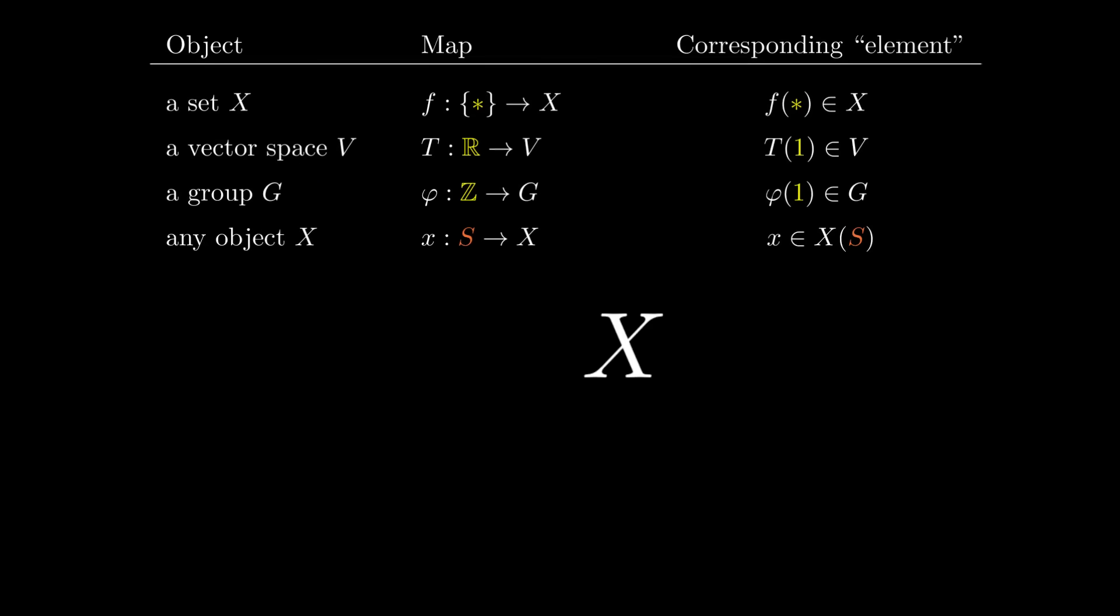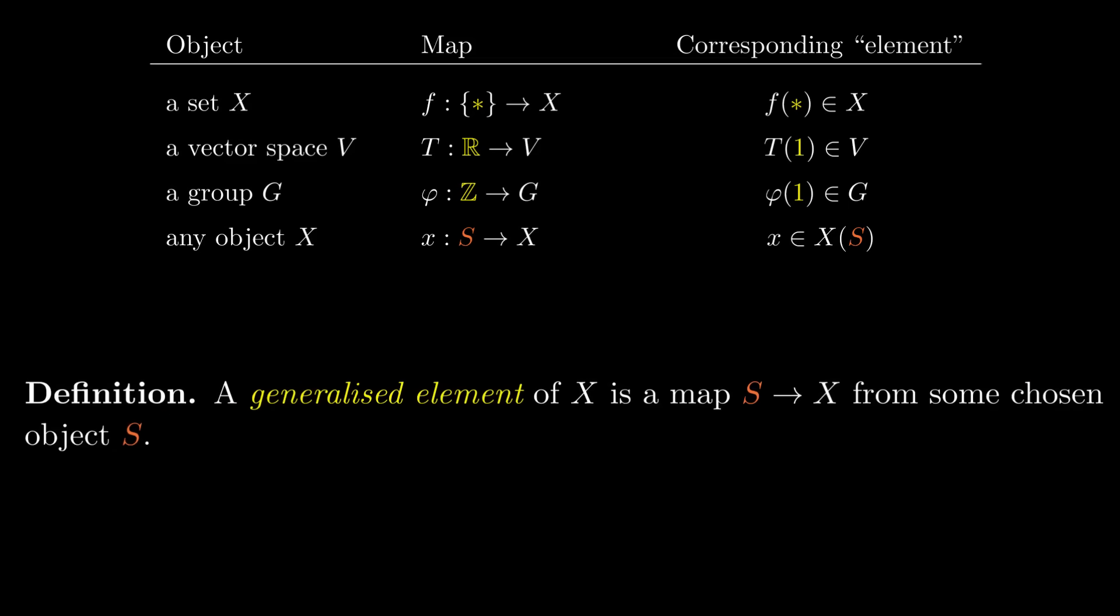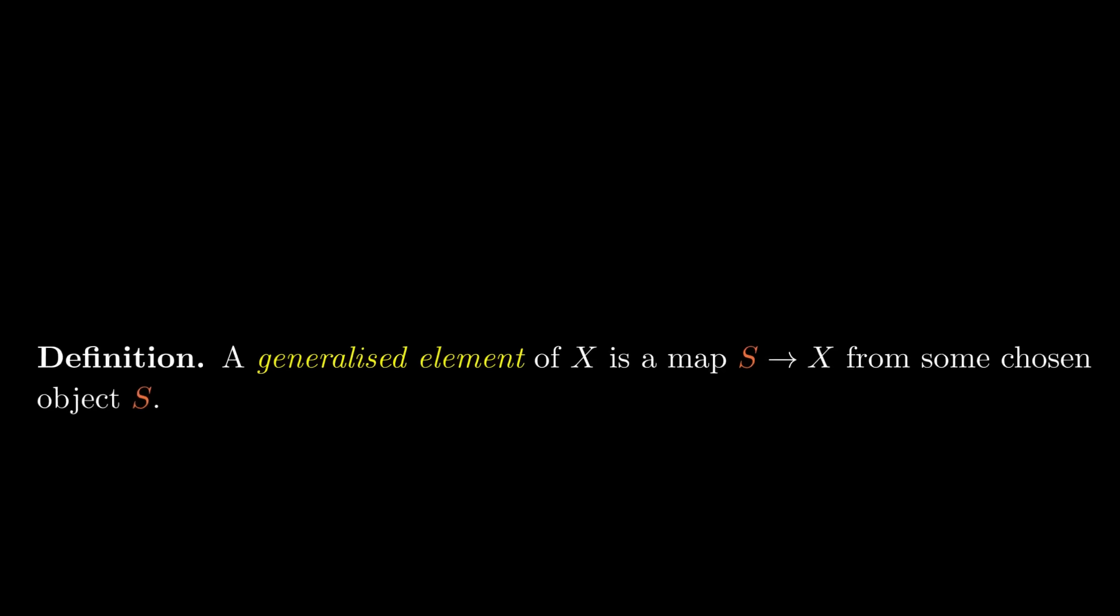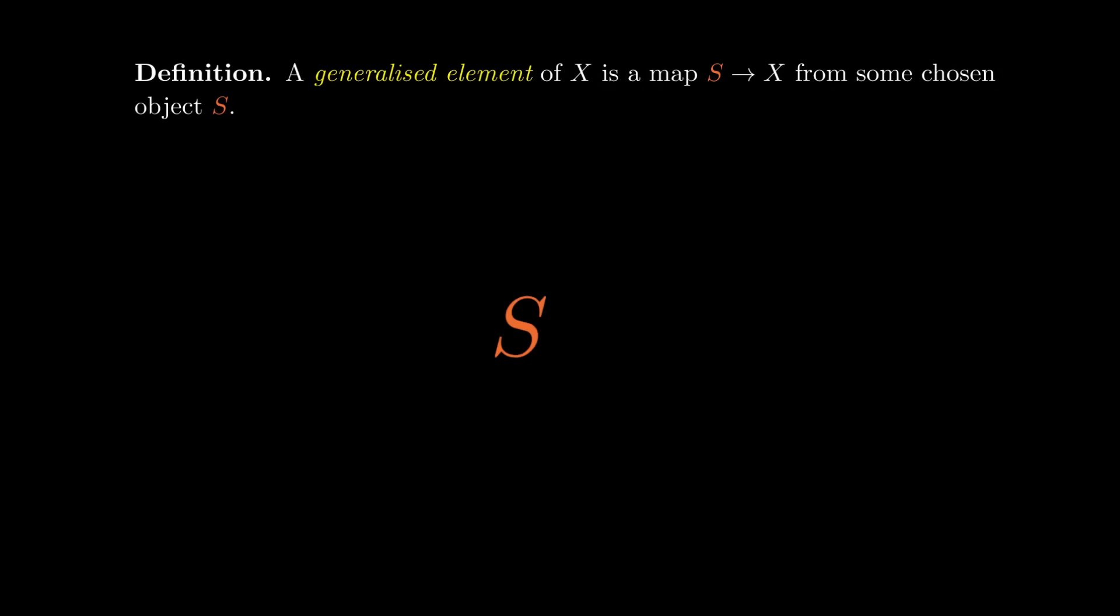In other words, given some object x of an arbitrary category, a generalized element of x consists of a choice of some object s of the same category and a choice of a map from s to x. In particular, by fixing our choice of object s, we can construct a genuine set from our object x.